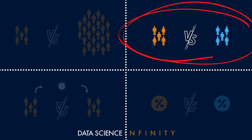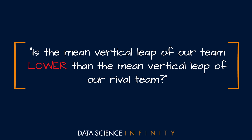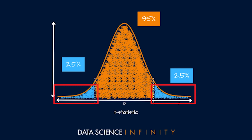Just like last time, as coach of the team we are losing sleep thinking about this question: is the mean vertical leap of our team lower than the mean vertical leap of our rival team? The independent samples t-test can be two-tailed, where we're simply looking at whether the means are different, or one-tailed, where we are concerned with a particular direction — is one mean higher or lower?